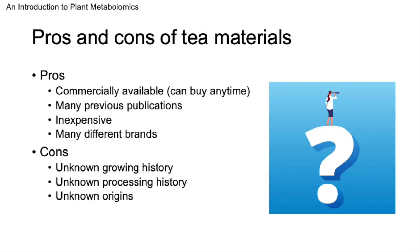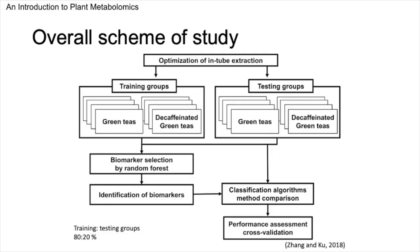Leveraging commercially available products provides advantages including immediate accessibility, cost-effective selection, and a diverse range of brands aligned with prior research publications. Despite these benefits, our experiment faces challenges such as lack of transparency concerning the tea's cultivation practices, processing methods, and origins of the leaves, which introduce potential inconsistencies. Our guiding hypothesis was the belief that certain volatile compounds undergo consistent change following the decaffeination process, and identifying these compounds could enable compensation in our data analysis for more accurate results interpretation.